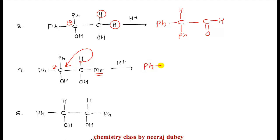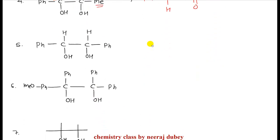So the product is Ph-C(=O)-Ph with H migration. In the next example, both carbocations are equally stable, so attack can happen on either carbon. If the right-side protonation occurs and carbocation is formed, then migratory aptitude is considered.